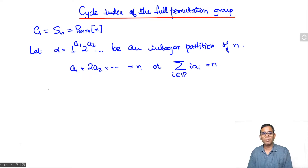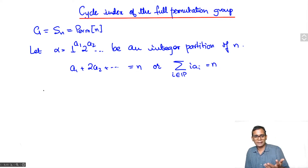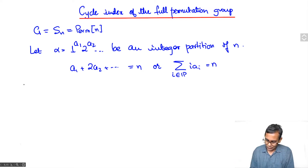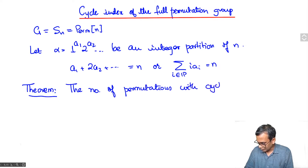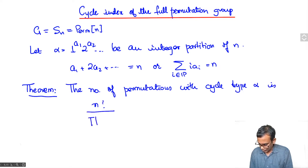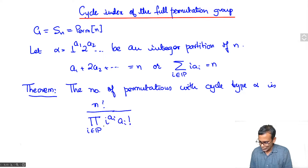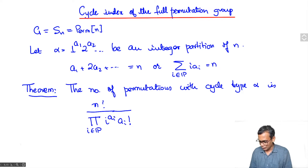That is alpha, and we want to know how many permutations there are with cycle type alpha — that is, how many permutations of the N-element set have a_1 one-cycles, a_2 two-cycles, a_3 three-cycles, and so on. I will state the result and then prove it. The number of permutations with cycle type alpha is N! divided by the product over i in P of i^(a_i) · a_i!. This is a finite product because a_i will be 0 for all but finitely many i, so those factors equal 1 and do not contribute.